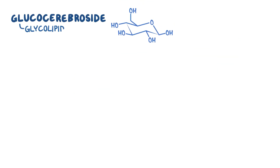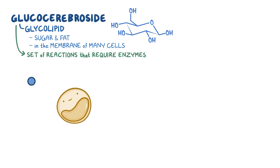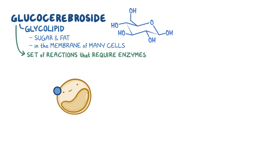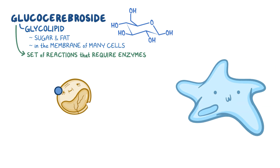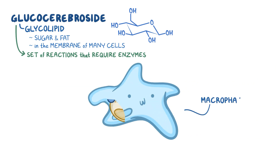Glucocerebroside is a glycolipid, which is a molecule containing both sugar and fat that's included in the membrane of many different cells. Glucocerebroside is formed through a set of reactions in the cell that require enzymes. Once the glucocerebroside is made, it becomes a part of various cells, and when these cells become old or damaged, they're often engulfed or eaten by immune cells called macrophages.